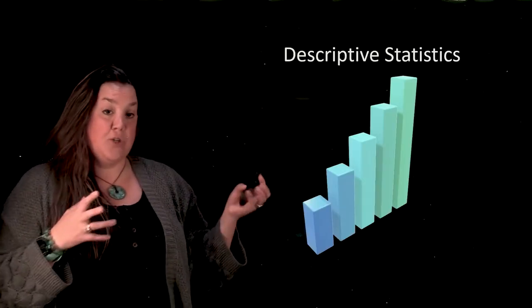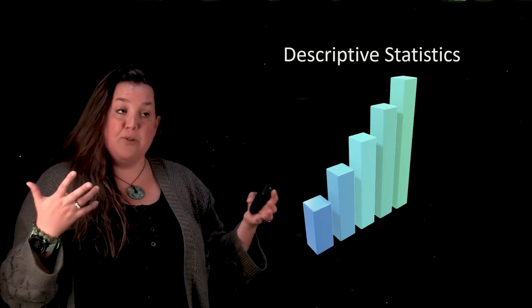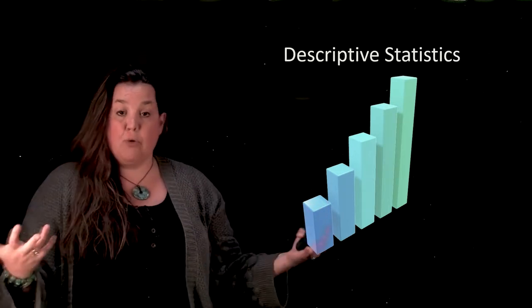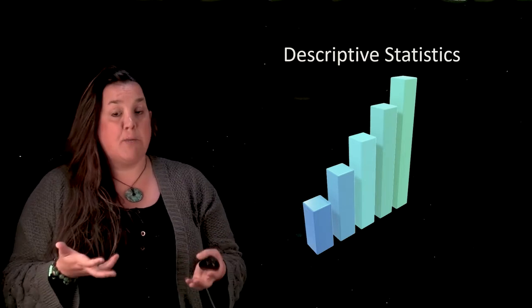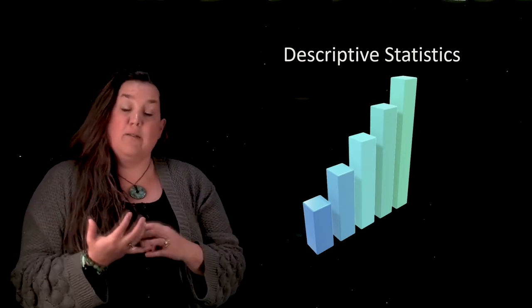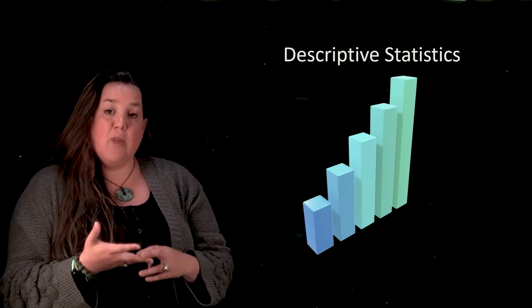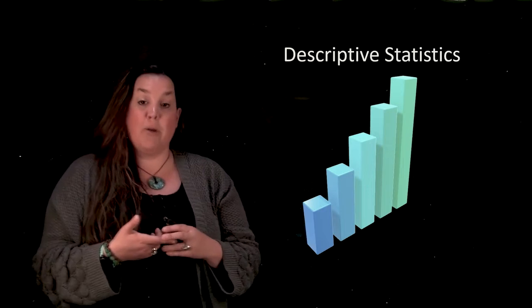So in statistics you can start with descriptive statistics and those tend to be done on samples where you can describe the group. So for example I could take a sample of a hundred GVSU students and look to find differences in their age, I can look at information on where they live, if they commute, I can look at how many credits they're taking.